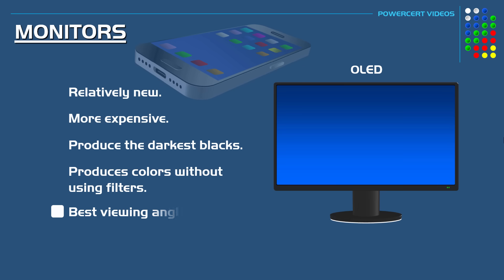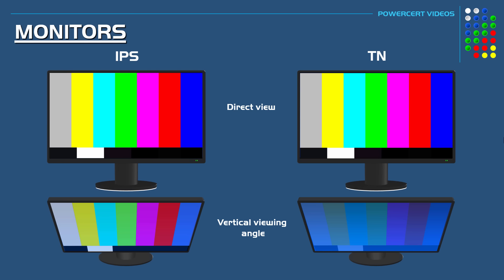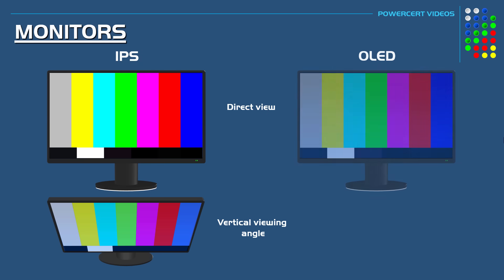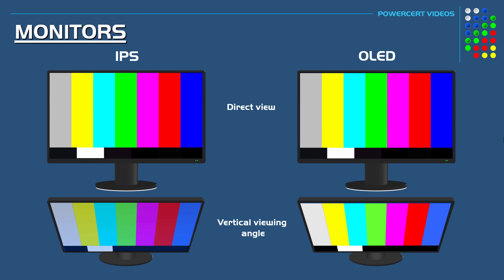OLED monitors will also have the best viewing angles. Previously we compared viewing angles between IPS and TN LED monitors, and the IPS was clearly better. But if we compare an IPS with an OLED, the OLED comes out the winner — there is no loss in colors when viewing an OLED at a vertical or horizontal angle. The image is identical.